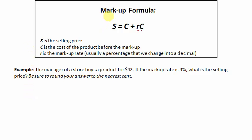We're going to discuss the markup formula, where we have S as the selling price, C as the cost of the product before the markup, and R is the markup rate, which is usually given as a percentage, and that we rewrite into a decimal.